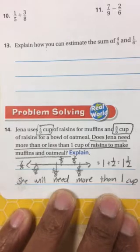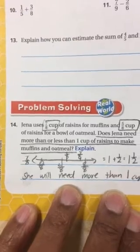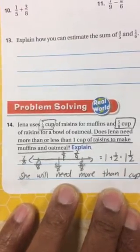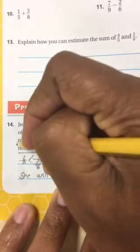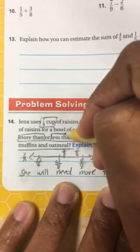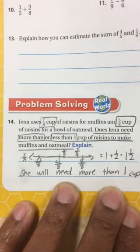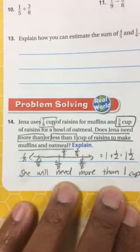So the question reads, does Jenna need more than... oh, Mr. Henderson left off some math words, so let's go back and fix that. Does Jenna need more than or less than one cup of raisins to make muffins and oatmeal?